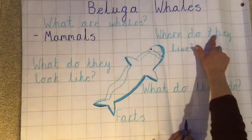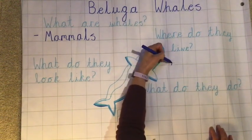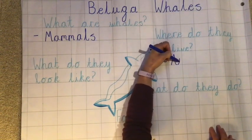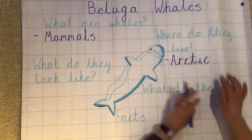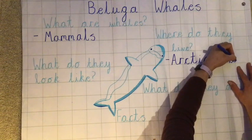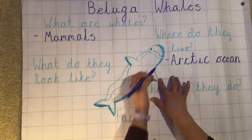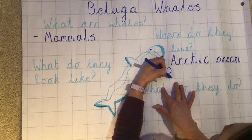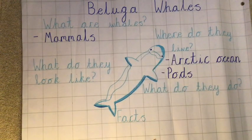Let's go on to 'Where do they live?' Do you remember where beluga whales live? They live in the Arctic Ocean. And they also live in pods as well, so I'm going to put that here too. You might know that we say a flock of birds, but we wouldn't say a flock of whales — we'd say a pod of whales. For whales, you'd call those groups pods. A nice, special word.